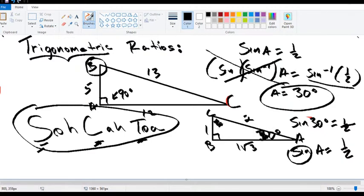And let's say that you didn't know what this was. You know that 90 plus 30 is 120, and according to the triangle sum theorem, this has to be 60. So with that in mind, let's go back to this problem here.